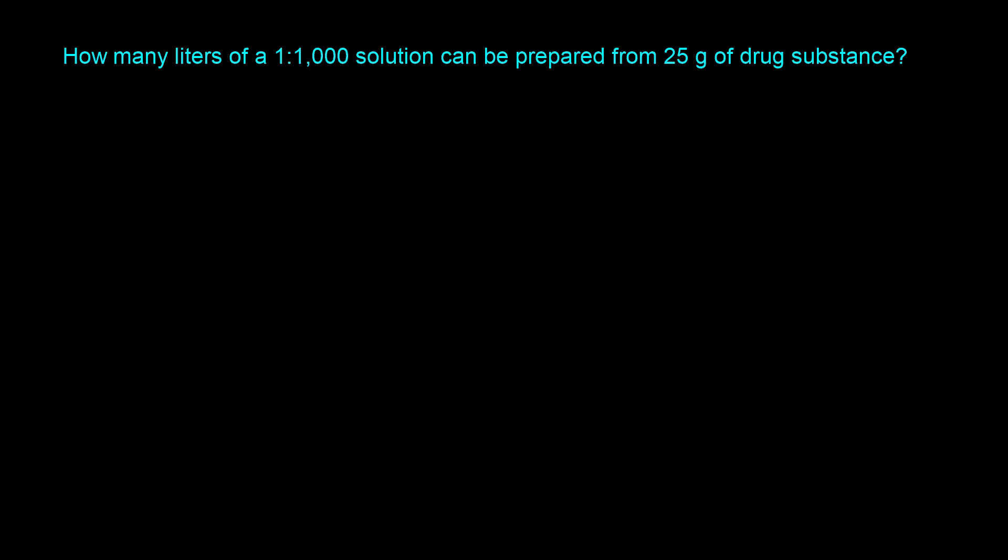Let's take a look at another example. This question says how many liters of a 1:1000 solution can be prepared from 25 grams of drug substance? So the first thing we want to do is identify the ratio strength. In this question it is 1:1000, and if you recall from the definition, 1:1000 actually means you have 1 gram of drug in 1000 milliliters of solution.